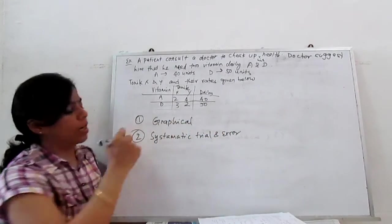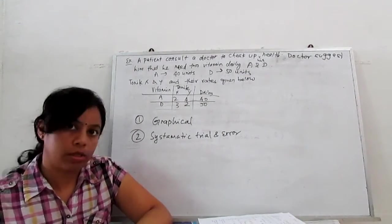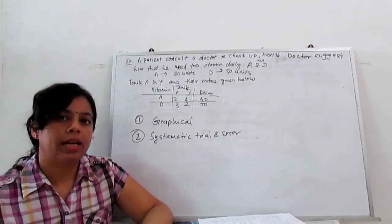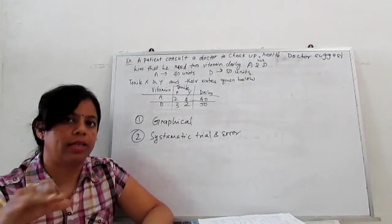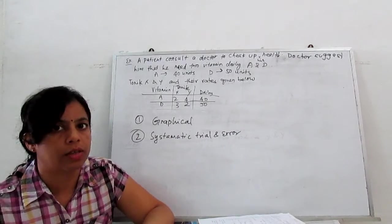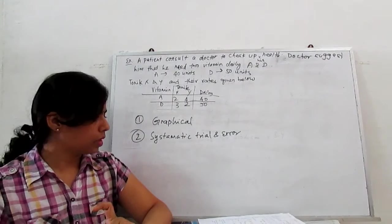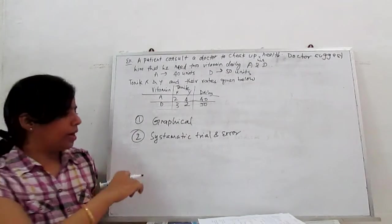For graphical method we need two variables X and Y, not more than two. Second is systematic trial and error, where we put systematic values of X and Y to find the objective function. But it is very long, laborious, takes too much time, so it is not user-friendly.